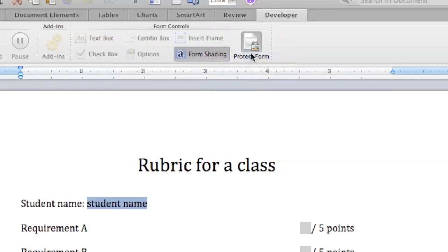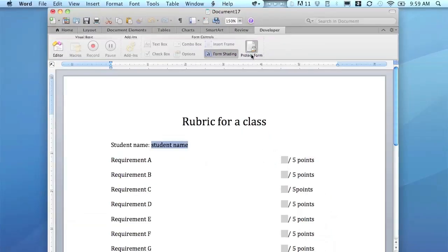We won't be able to edit anything else, like the title or what Requirement A is. We can't edit that. We'll have to unprotect the form in order to do that. So when I click here, I only have access to my fields I've created. A thing about the fields is there is no spell check, so just keep that in mind.